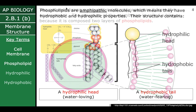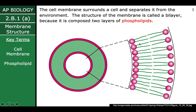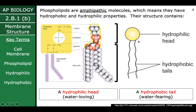These phospholipids — zooming in on one of them — have two different parts. Over on the right, I have the head and the tails. The head is called hydrophilic, and if you recall from chapter three, hydrophilic means that they like water — they can dissolve in water. Whereas the tails are hydrophobic, so they are water-fearing, or they do not like water.